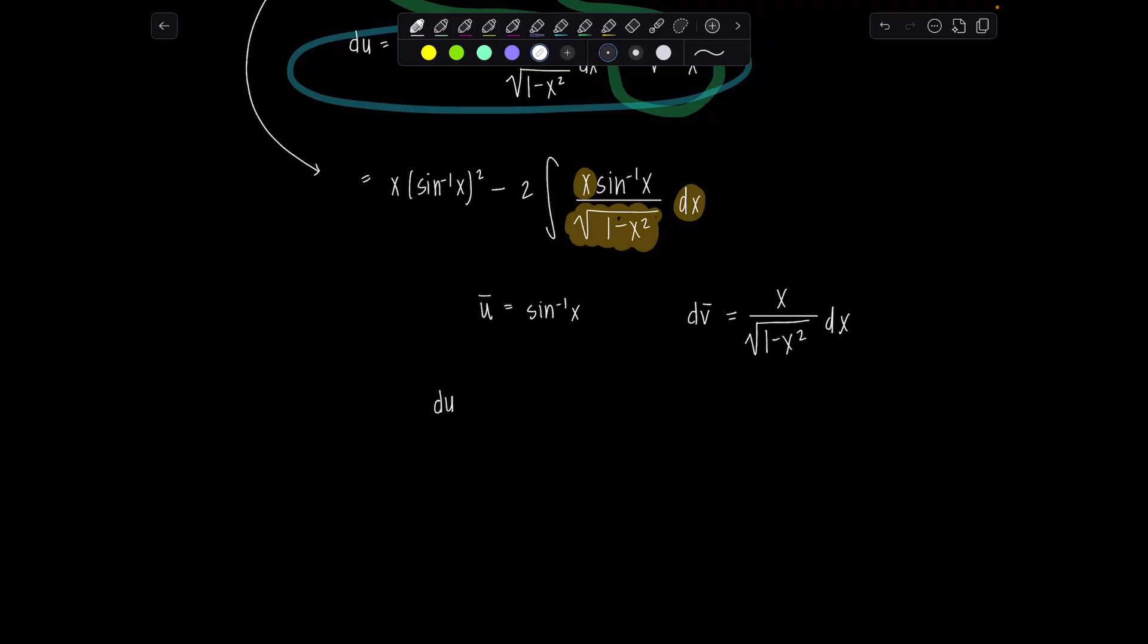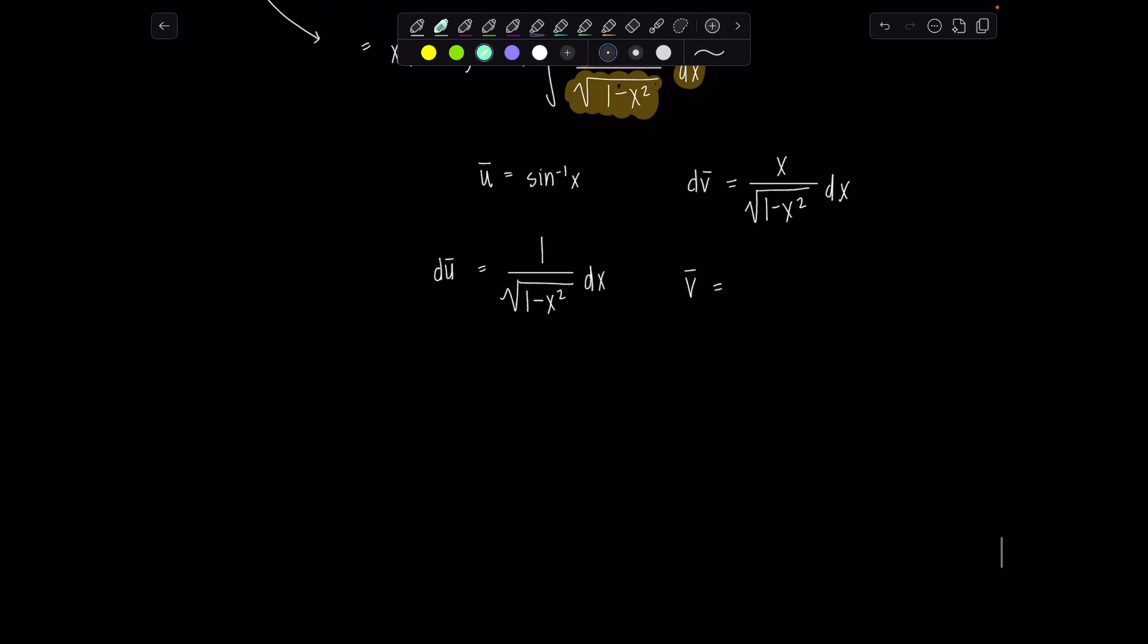Okay so now let's find du bar. That part's not too difficult. It's going to be one over square root one minus x squared dx. Now v bar might be a little bit more involved. Depending where you are in your math career you might be able to do this in your head and it's no big deal. If not I'll work it through for you. We're just going to take a little aside moment.